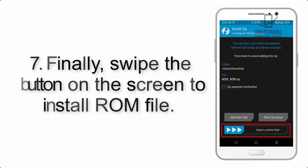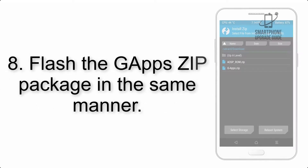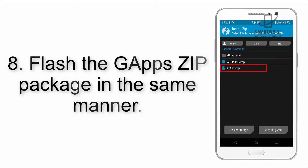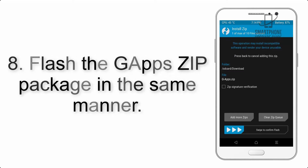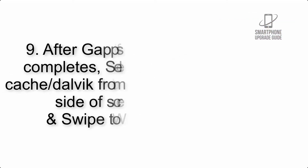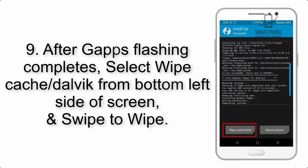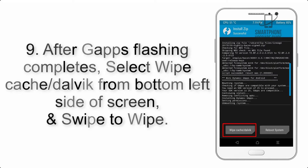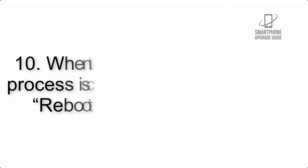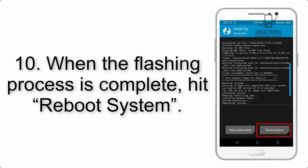Step 7: Swipe the button on the screen to install the ROM. Step 8: Flash the GApps zip package in the same manner. Step 9: After GApps flashing completes, select Wipe Cache and Dalvik from the bottom left side of the screen and swipe to wipe.